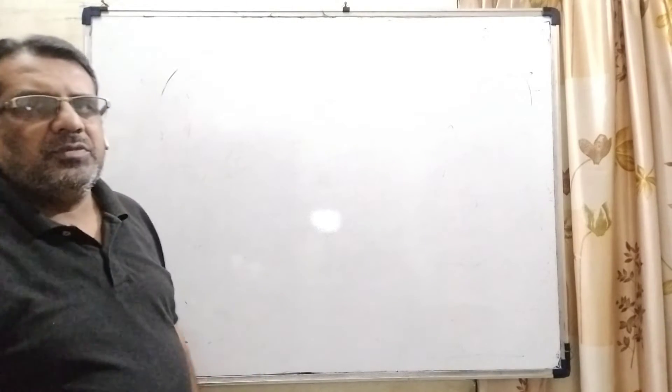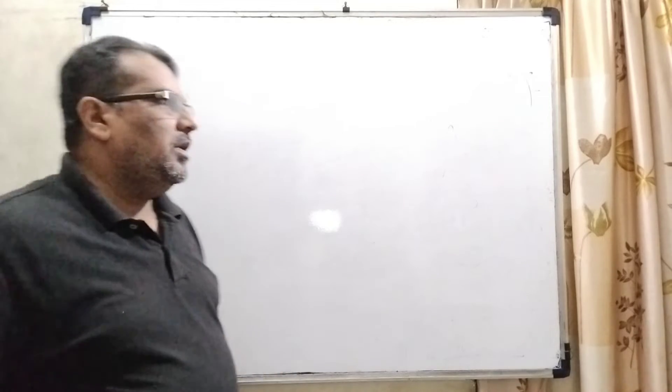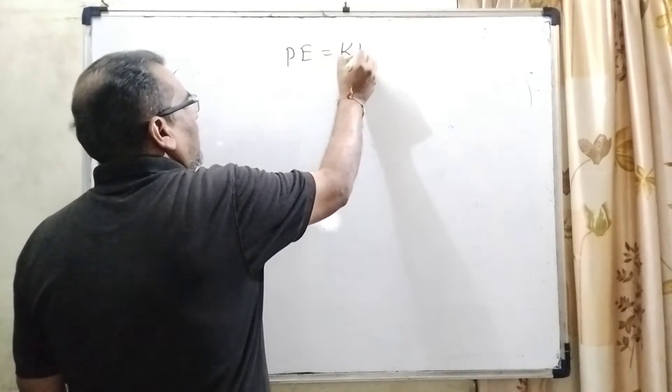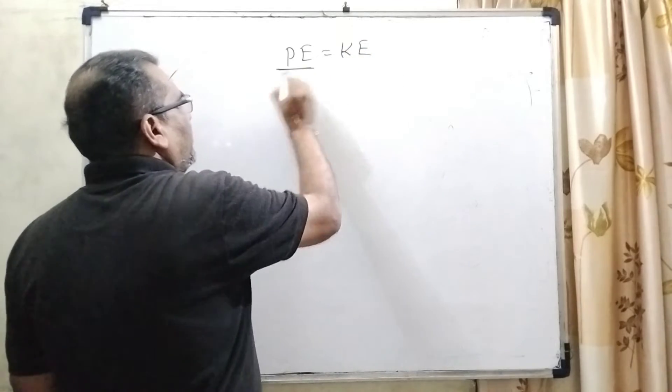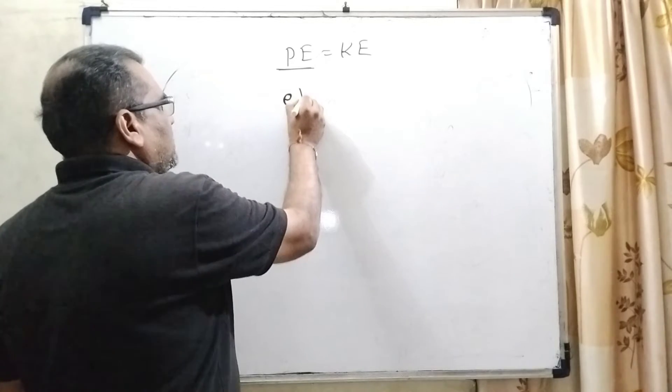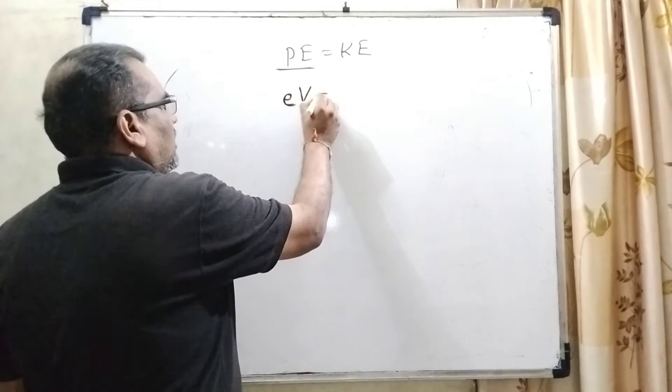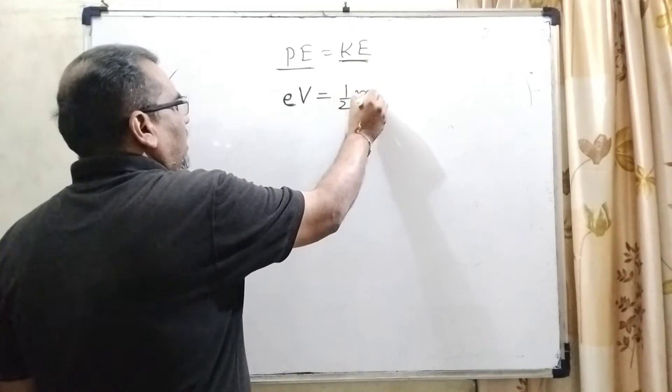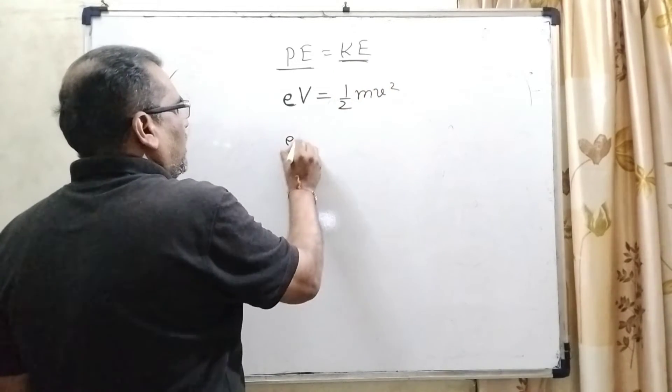As per the law of conservation of energy, potential energy equals kinetic energy. So the potential energy in the form of electrostatic energy can be written as eV, and kinetic energy can be written as ½mv².